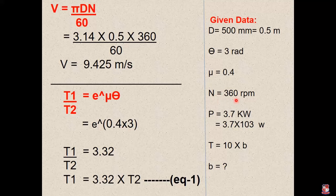N is equal to 360 rpm. Power is given 3.7 kilowatt. So we have to convert in watt, so 3.7 into 10 raised to 3 watt. Tension is given 10 into b. So we have to find out b.